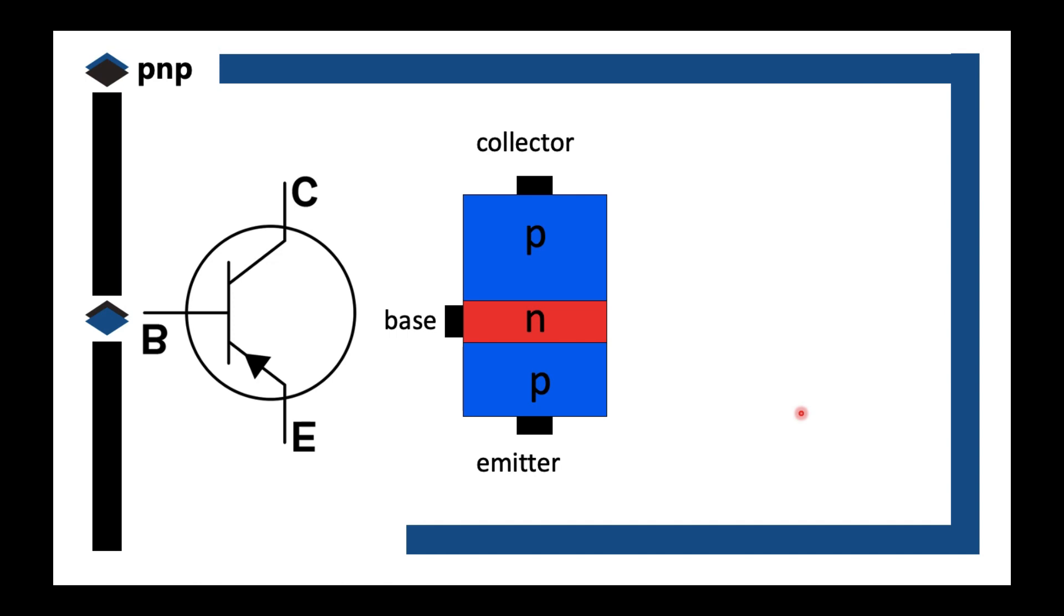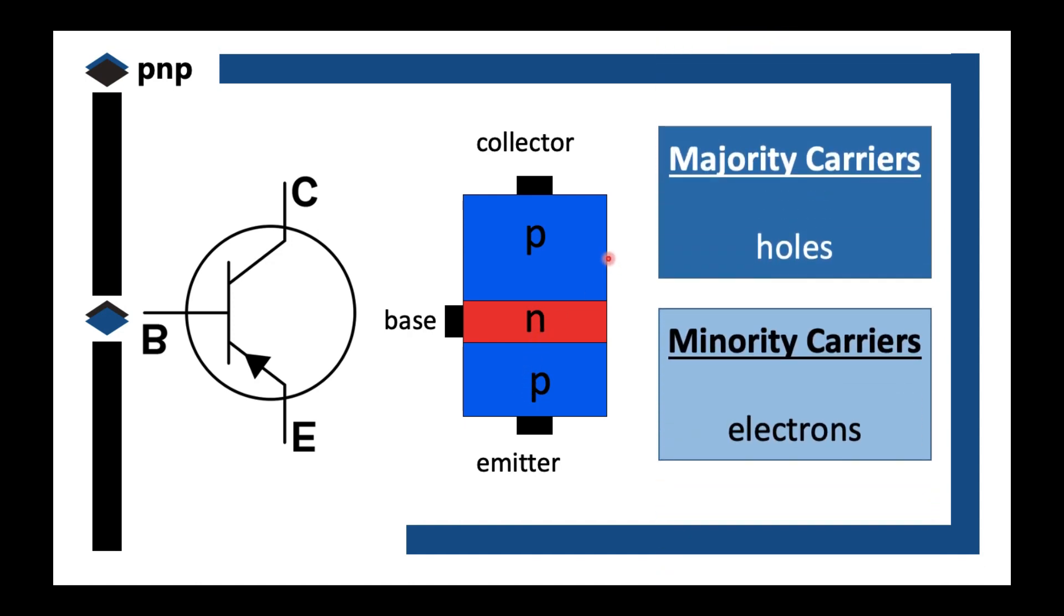Let's move forward to the PNP. Maybe you're surprised the arrow is at the bottom now. That's no problem, as long as you don't switch the collector and emitter. The identifier of the emitter is it has the arrow. So a PNP is made up of two P-type materials and in the middle there's the N-type material. Since we have two P-type materials, the majority carriers are holes and the minority carriers are electrons.